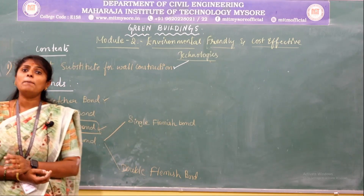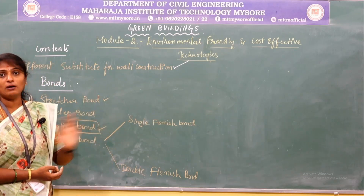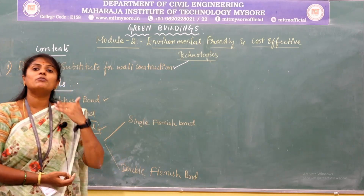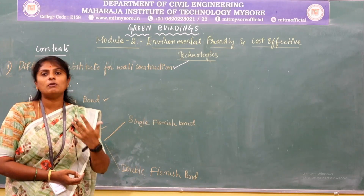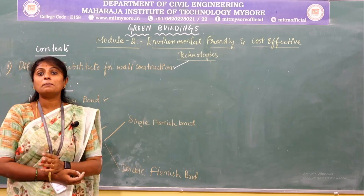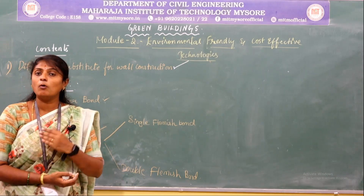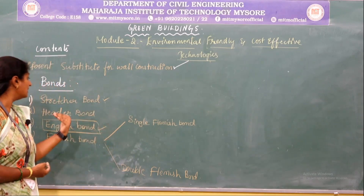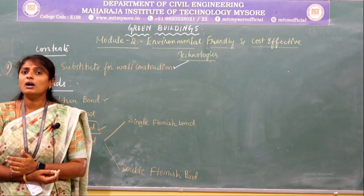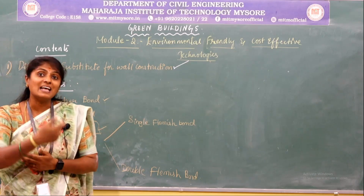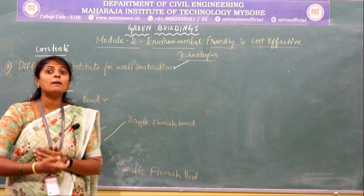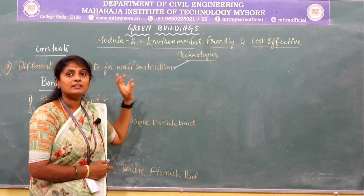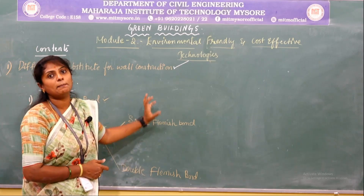When you compare this with double Flemish bond, both the front face as well as the back face will be Flemish bond. The arrangement of the bricks will be such that both front face and back face represent the Flemish bond itself. To obtain this arrangement, we need to study the arrangement of bricks in single Flemish bond and double Flemish bond separately.